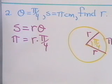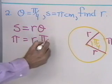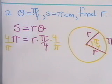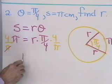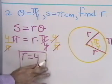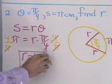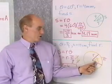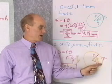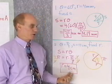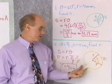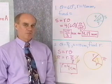I'll multiply both sides of this equation by 4 over π. The π's divide out on the right side, and I end up with r equal to 4 centimeters. So if I have a circle in which a central angle of π/4 radians — which is 45 degrees — cuts off an arc of length π, then the radius of that circle must be 4 centimeters.